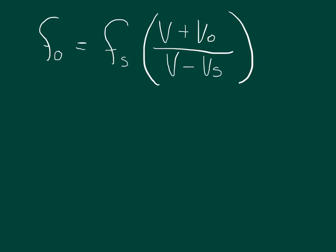Now the problem asks in part B: what is the speed of the car? We want to know the speed of the source — the velocity of the source in the Doppler equation. We have to solve for this velocity of the source, but we also don't know the velocity of the observer. We just know that it's one-third the velocity of the source, so the velocity of the observer equals one-third the velocity of the source.